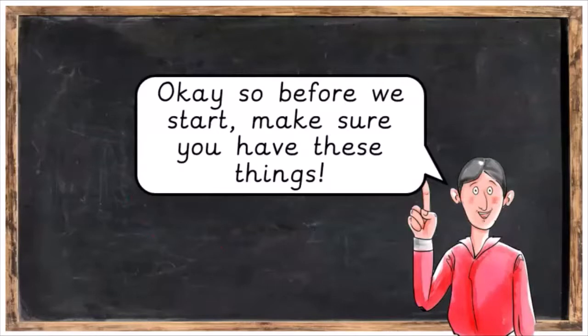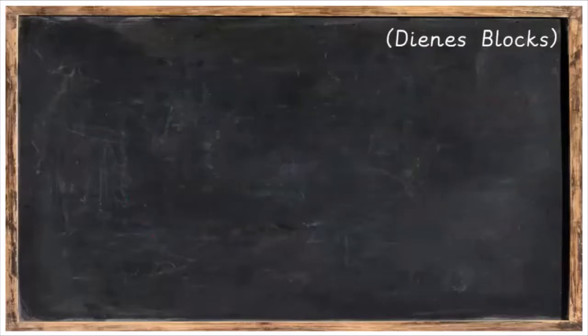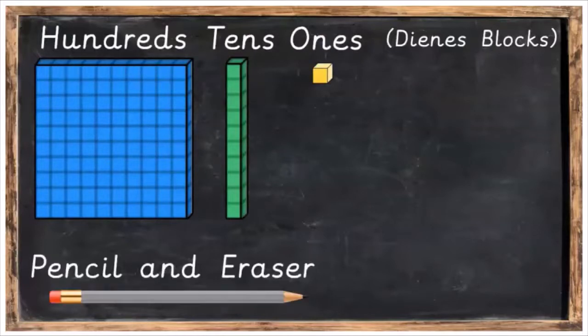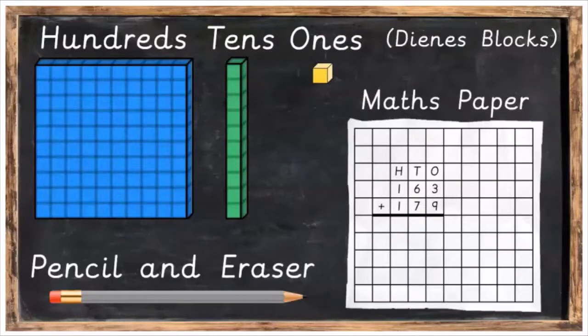Before we start, make sure you have these things. You're going to need some Dienes blocks—some hundreds, some tens and some ones. You're going to need a pencil and an eraser, and you're also going to need some maths paper.